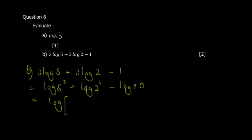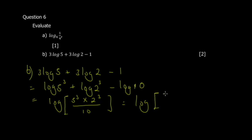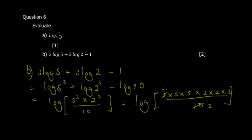When terms are adding, you multiply inside the logarithm. Positive terms go in the numerator: 5 to the power 3 multiplied by 2 to the power 3. The negative term goes in the denominator, which is 10. So you get log of (125 times 8) divided by 10. Simplifying: 5 into 10 cancels, leaving 25 times 4 which is 100, and log base 10 of 100 equals 2.